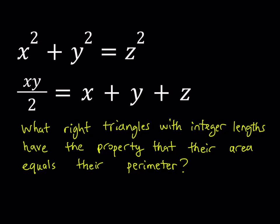This gives us the following system: x² + y² = z², which is the Pythagorean theorem for the legs x, y, and the hypotenuse z. And the area of a right triangle with legs x and y is xy/2, and the perimeter is x + y + z.